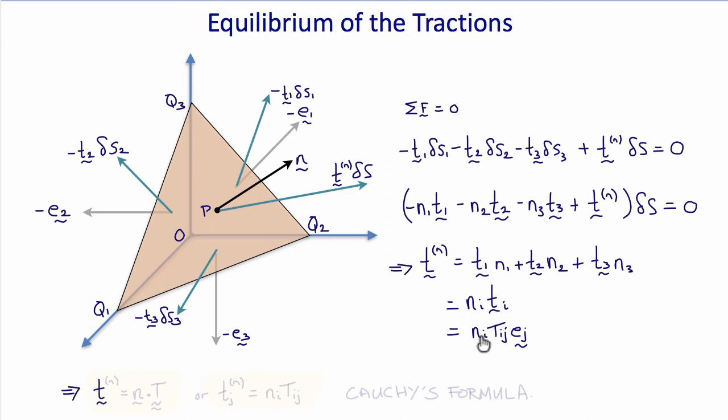And from our previous definition, t i, the tractions acting on each of the faces, are t i j e j. So in component notation tj superscript n equals n i t i j. And this is Cauchy's formula.